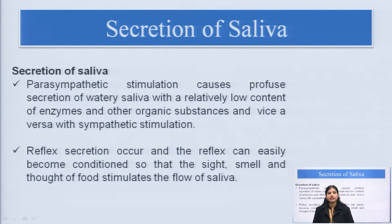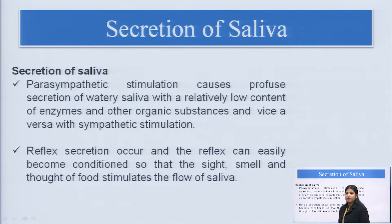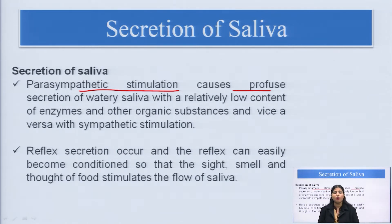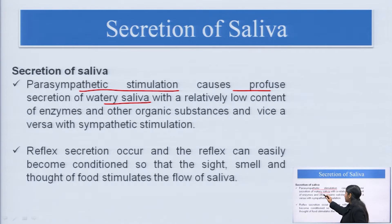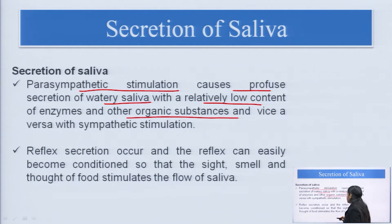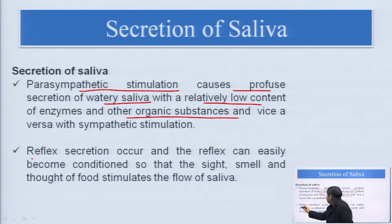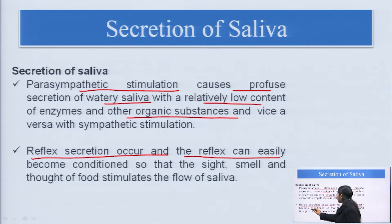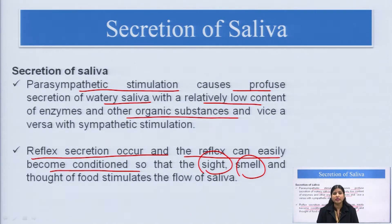The secretion is regulated by the nervous system — specifically the parasympathetic and sympathetic systems. Parasympathetic stimulation causes a profuse secretion of saliva, increasing secretion with a relatively low content of enzymes and organic substances. The opposite is true for sympathetic stimulation. Reflex secretion also occurs and can become conditioned, so the sight, smell, or thought of food can stimulate saliva secretion by activating the parasympathetic system.